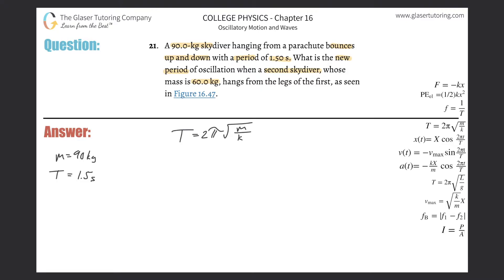I'm going to solve this step by step. Plugging in the values: 1.5 seconds is equal to 2 pi times the square root of 90 kilograms over k. To solve for k, first divide out the 2 pi from both sides: 1.5 divided by (2 times pi) works out to be about 0.239. That's going to be equal to the square root of 90 over k.